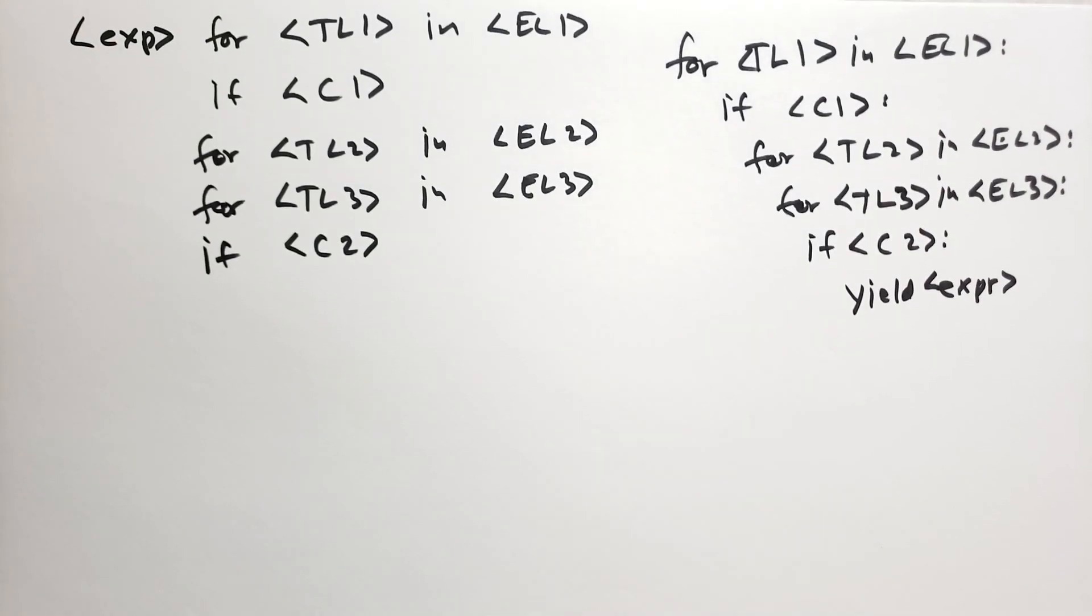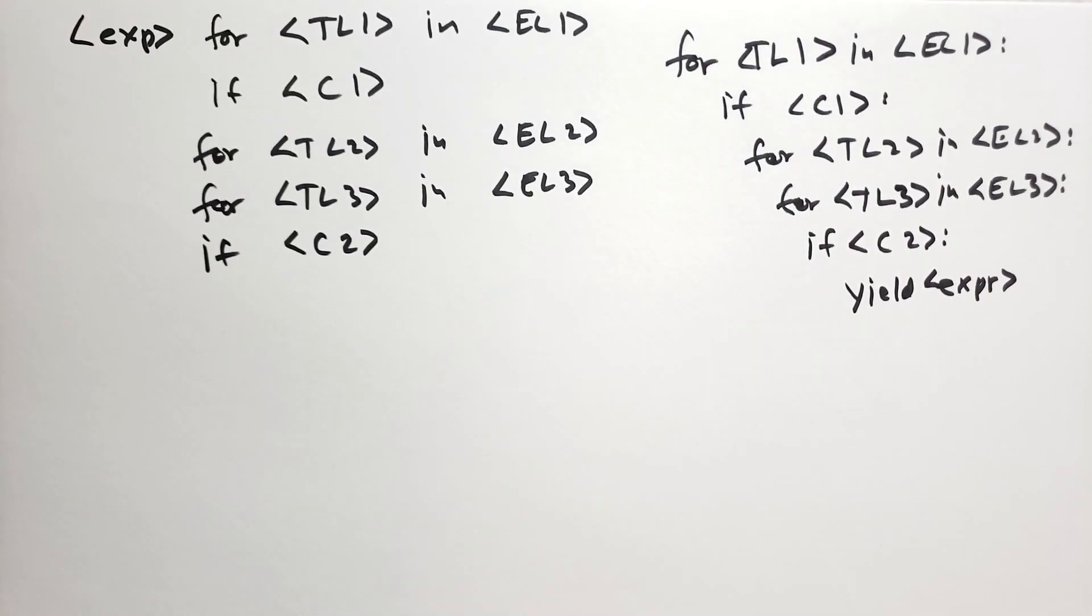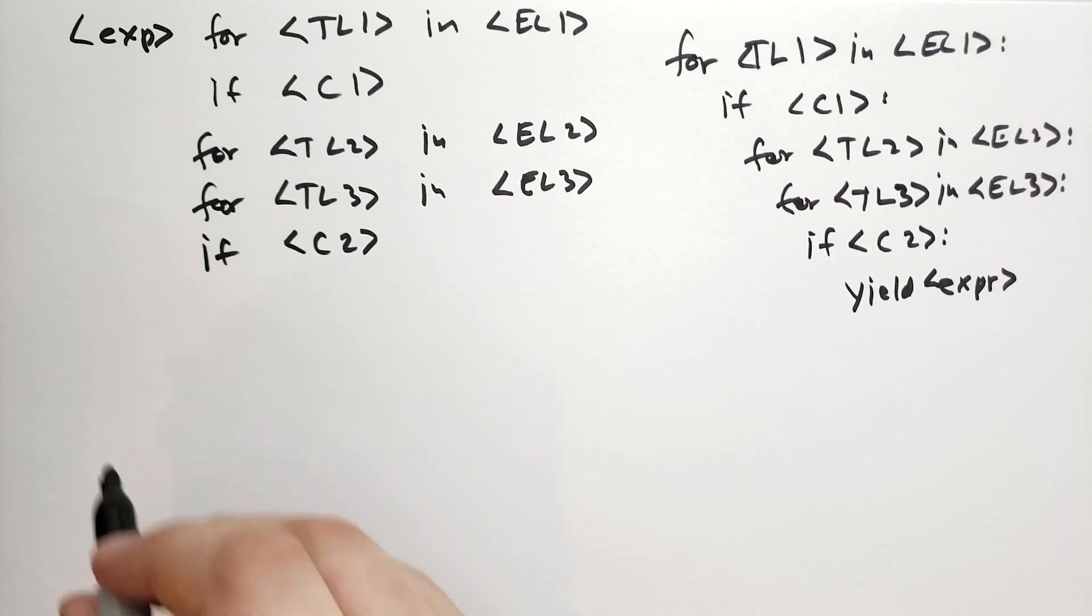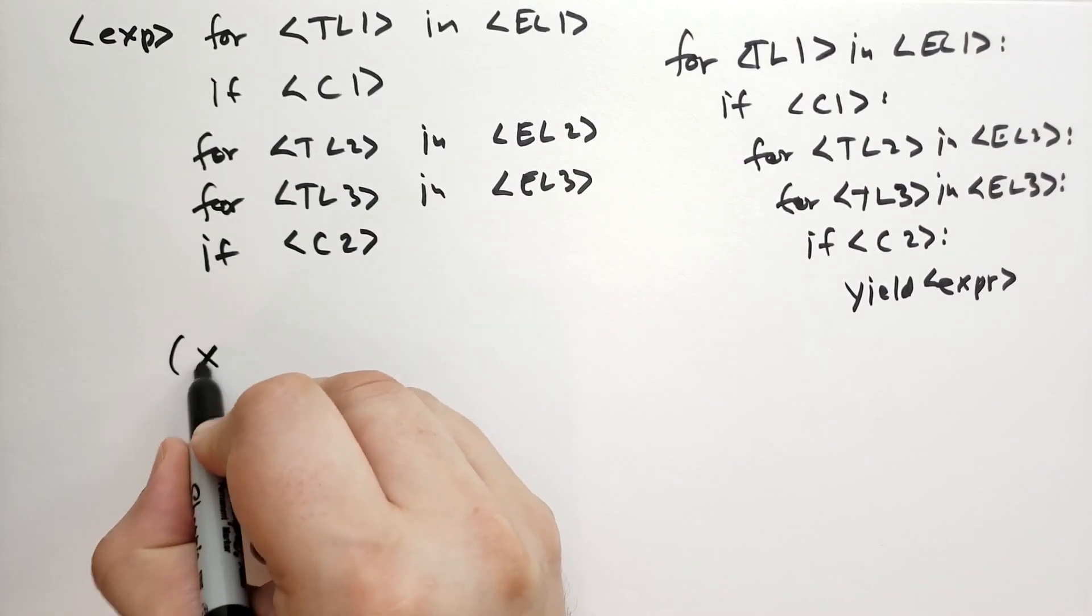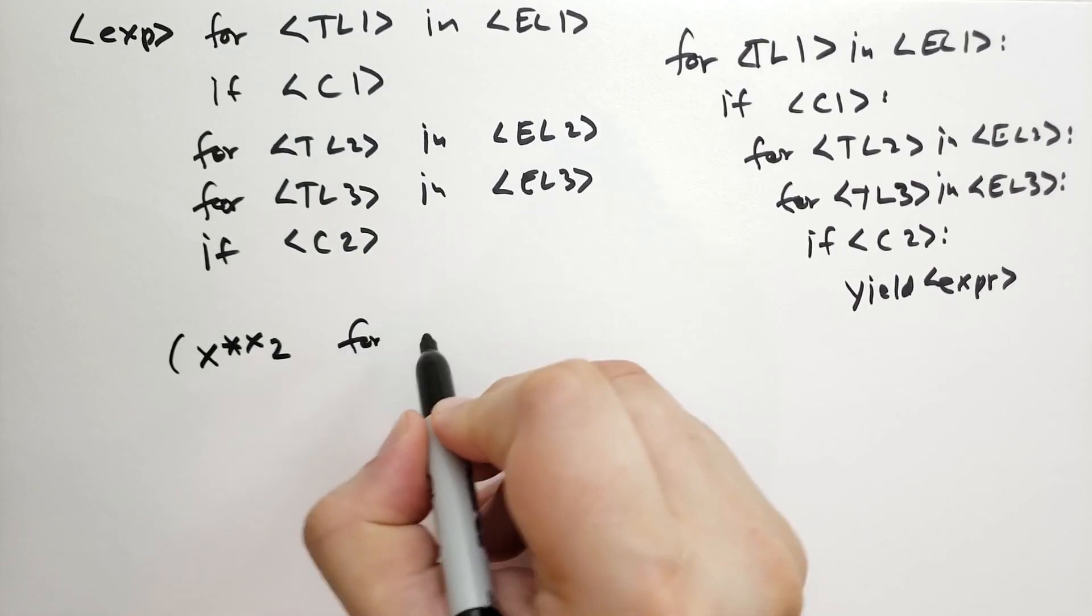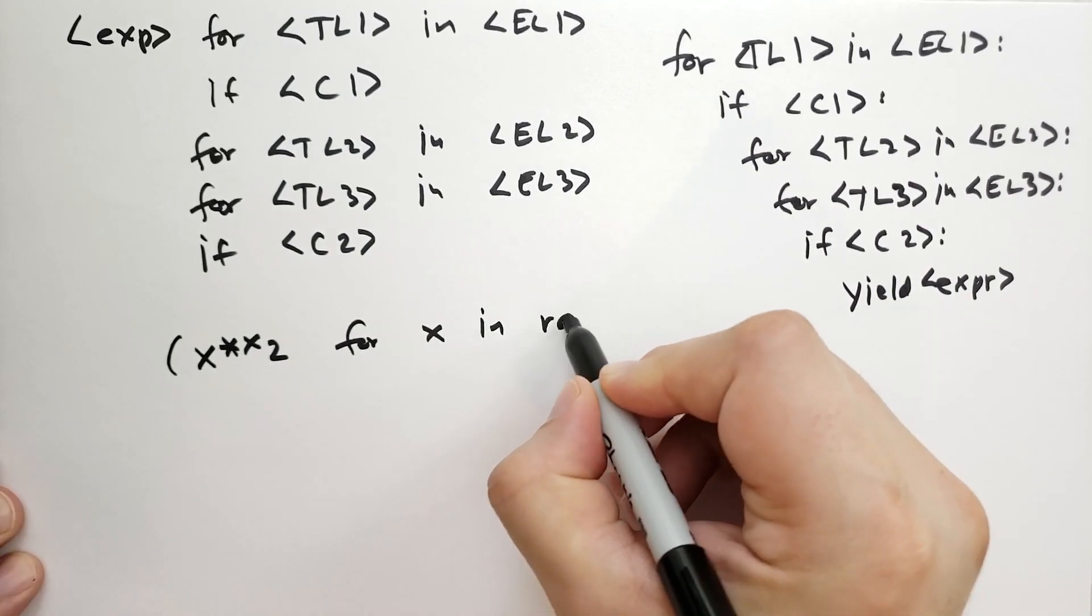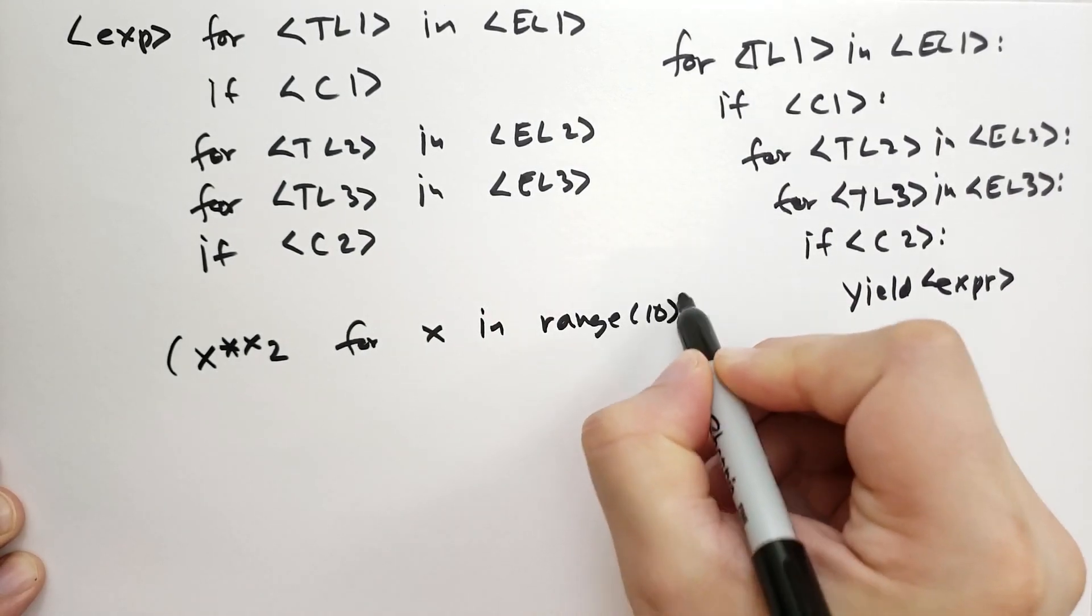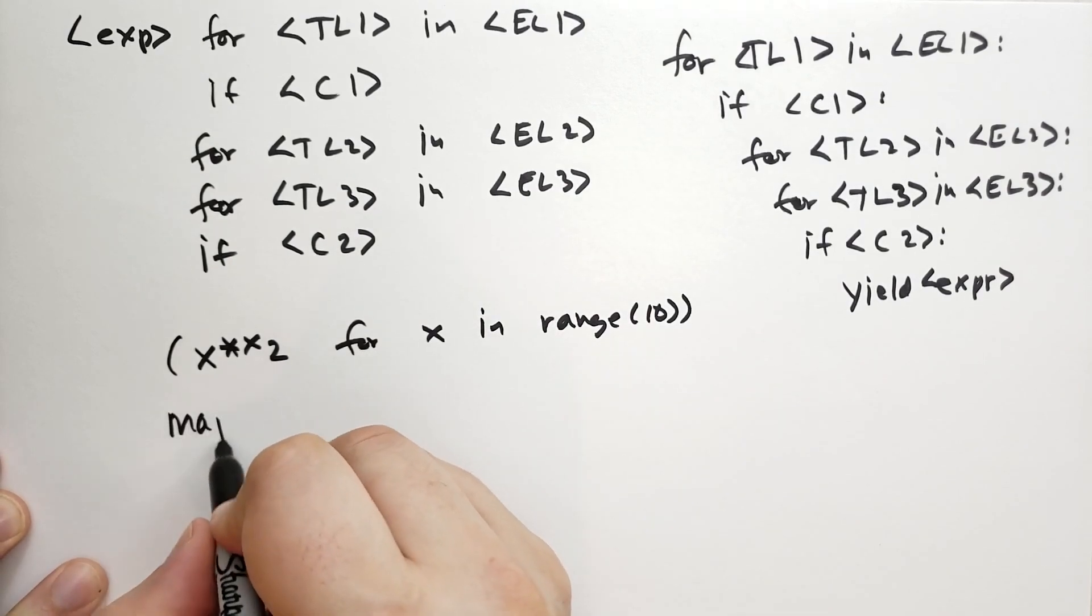You can use comprehensions to replace map and filter. So here's an example to replace the map function. So if we had x**2 for x in range 10, that's the same as map lambda x: x**2, range 10.